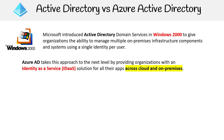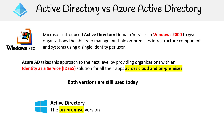Azure AD takes this approach to the next level by providing organizations with identity as a service, an IDaaS solution for their apps across cloud and on-premise. Both versions are still used today because they have different utility. Active Directory is for on-premise, and Azure AD is the cloud-hosted version. In many regards, these can also be connected together.